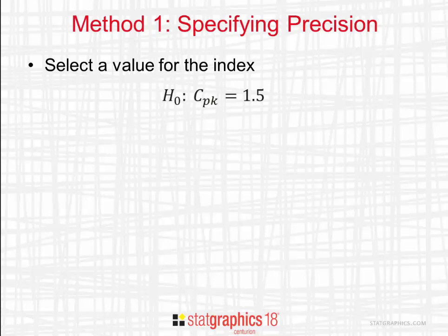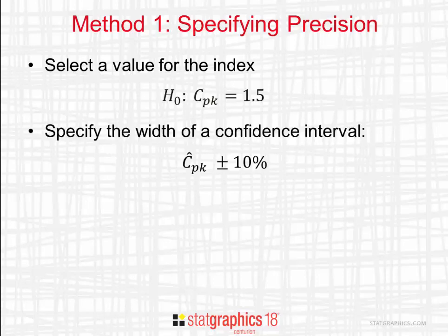The first thing you do is you select a value of CPK. For example, a lot of companies would like their CPKs to be in the neighborhood of 1.5. You then specify the width of the desired confidence interval for CPK. For example, you might want enough samples so you could estimate the true CPK to within plus and minus 10%.